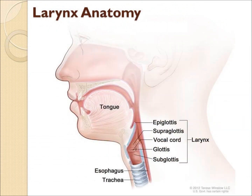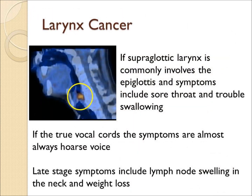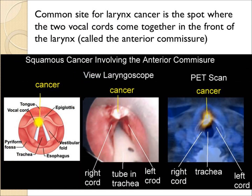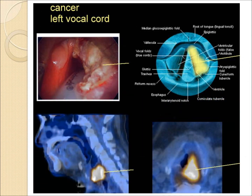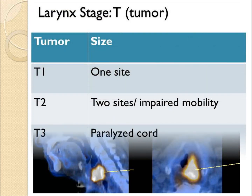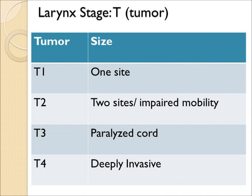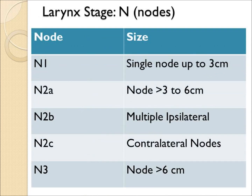Larynx anatomy is shown here. The upper or supraglottic larynx commonly involves the epiglottis, and patients present with a sore throat or trouble swallowing. Cancer of the vocal cords presents with hoarseness and occasionally with swollen lymph nodes. A typical laryngoscopy view of cancer in the front of the larynx is shown, along with the corresponding PET-CT. A more advanced cancer involving the whole left vocal cord is also shown. The staging system for larynx includes whether the cord is movable or paralyzed, as well as the lymph nodes, and these are combined to form different stages.